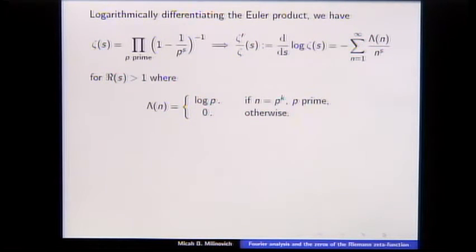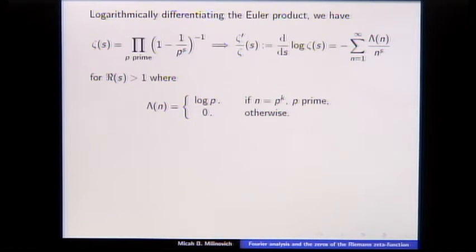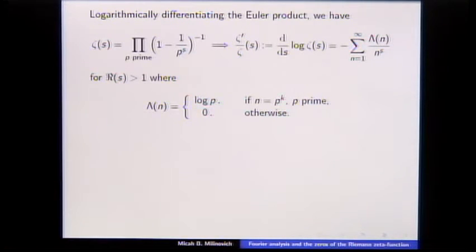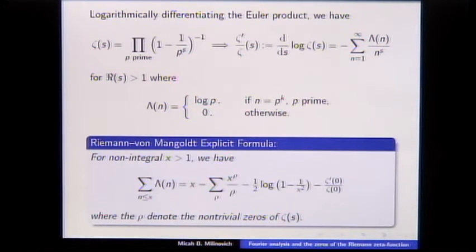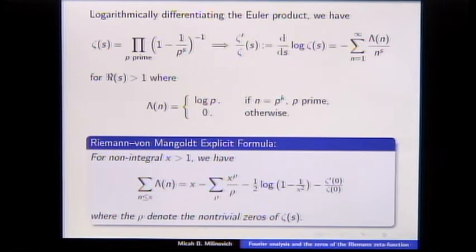The main tool I'm going to be talking about today is the explicit formula. If you start with the Euler product and logarithmically differentiate, you get back to a Dirichlet series supported on prime powers — this is von Mangoldt's function — you get log p if n is a prime power, and zero otherwise.